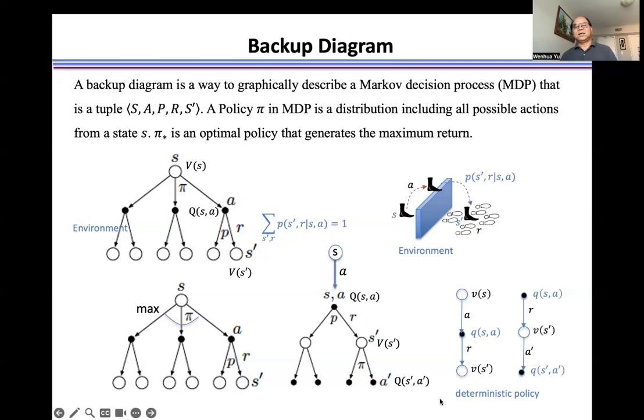If we are interested in the action-state value function Q, then we use this backup diagram. We start from Q, then this is the state transition probability, and this is the reward for given state S and a selected action.